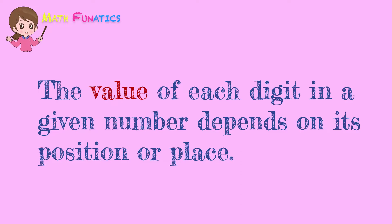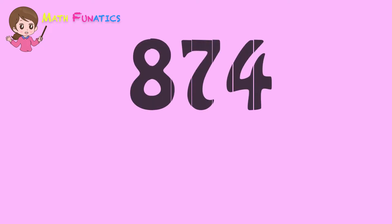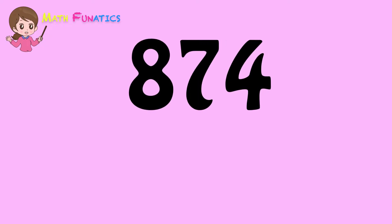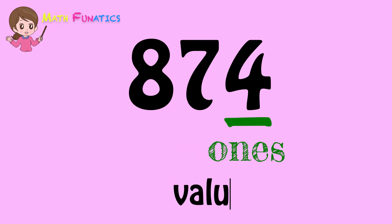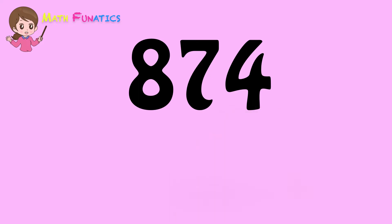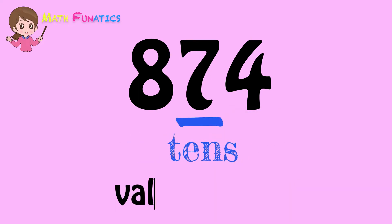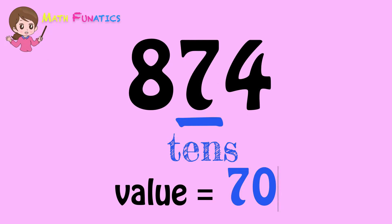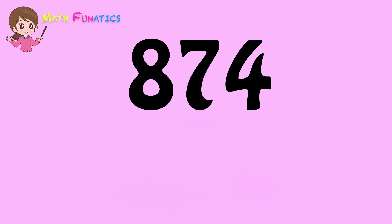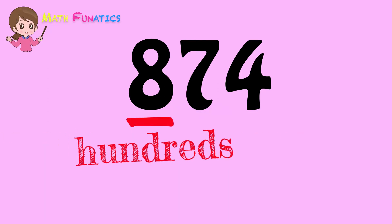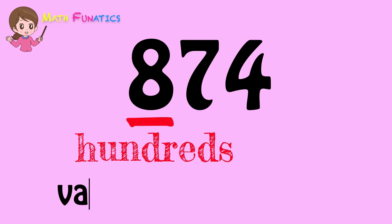Let's get the value of each digit in 874. The digit 4 is in the ones place and its value is 4. 7, on the other hand, is in the tens place and has a value of 70. 8 is in the hundreds place and its value is 800.